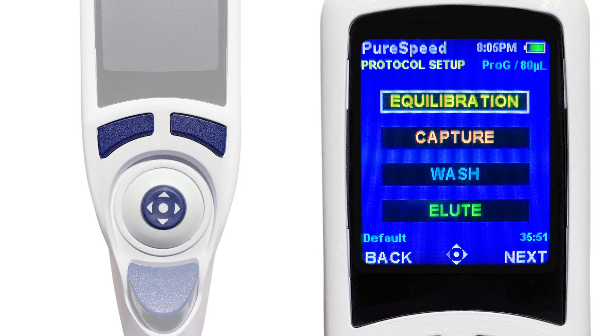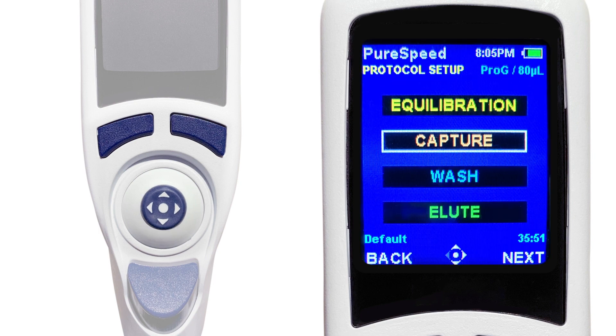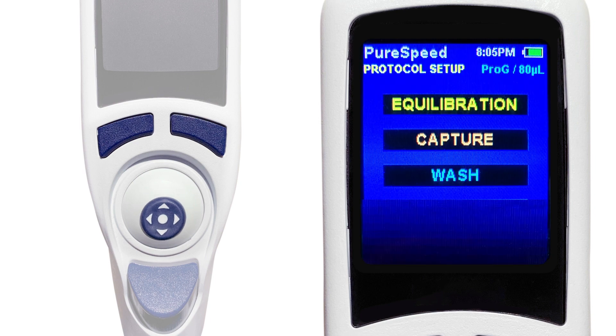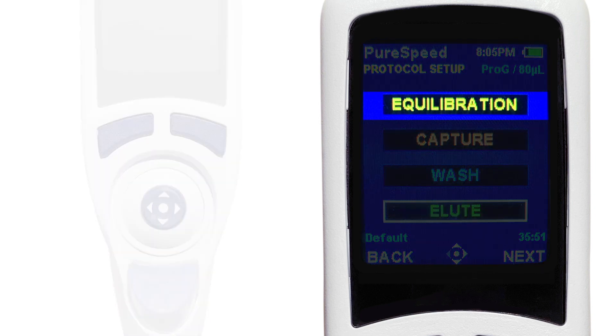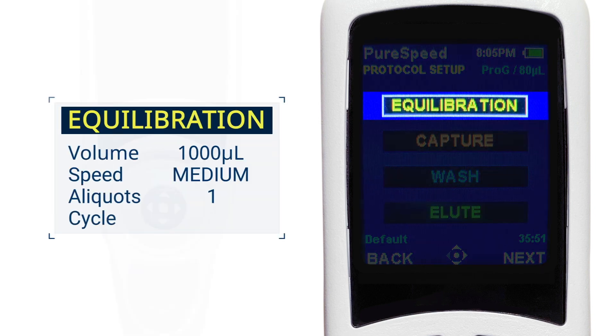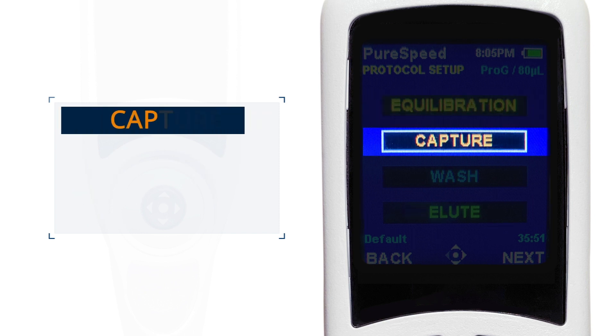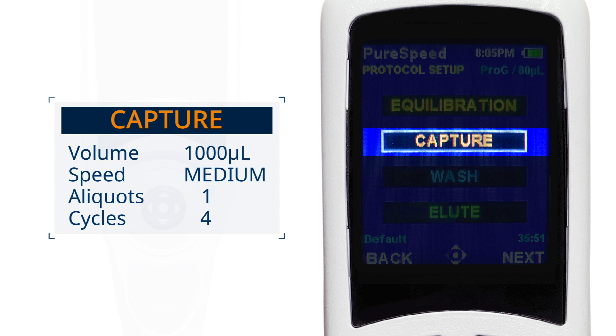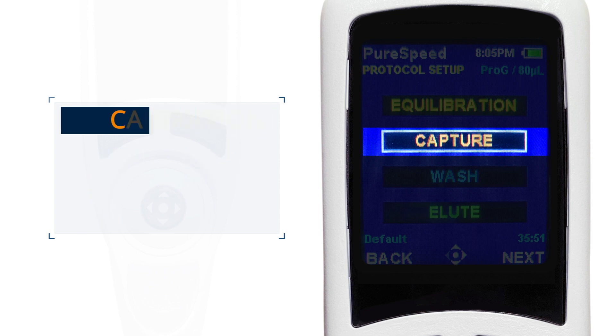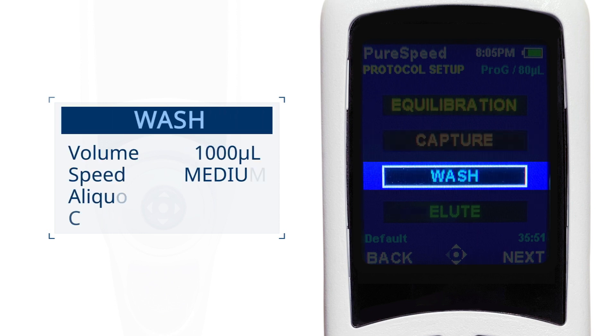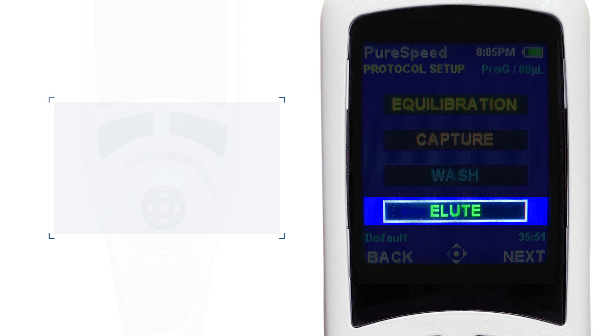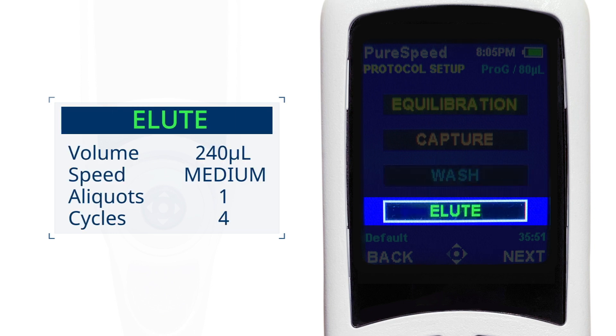You will now see four sections which make up a method: Equilibration, Capture, Wash, and Elute. Each of those sections are already programmed to give you the best results for your selected Phi-Tip column. The included methods set the volume, flow rate, and the number of cycles for the pipette to intake and expel the sample through the column. In addition, they can be adjusted to customize your prep even more.